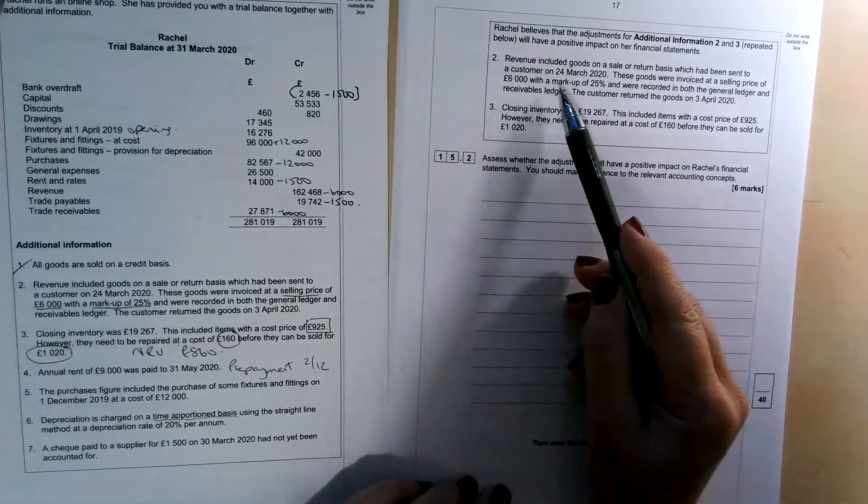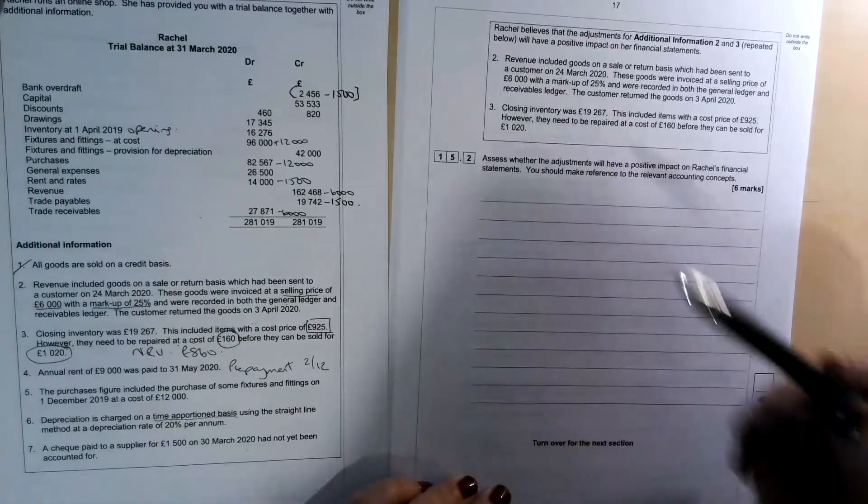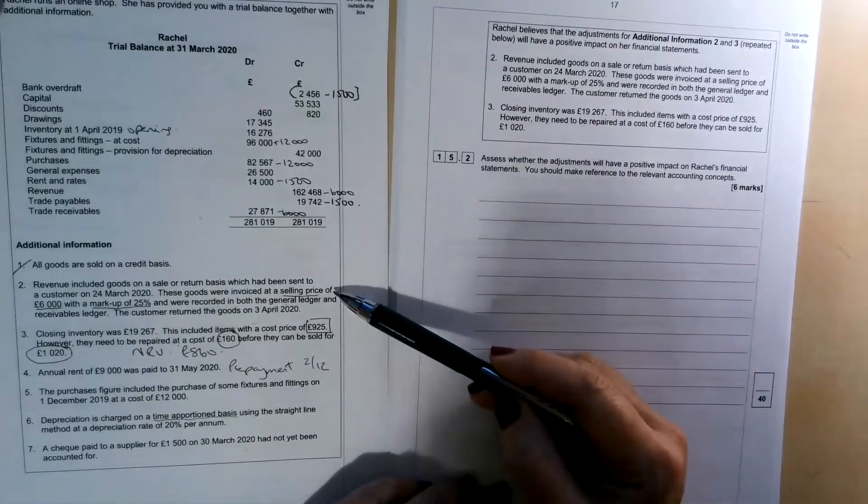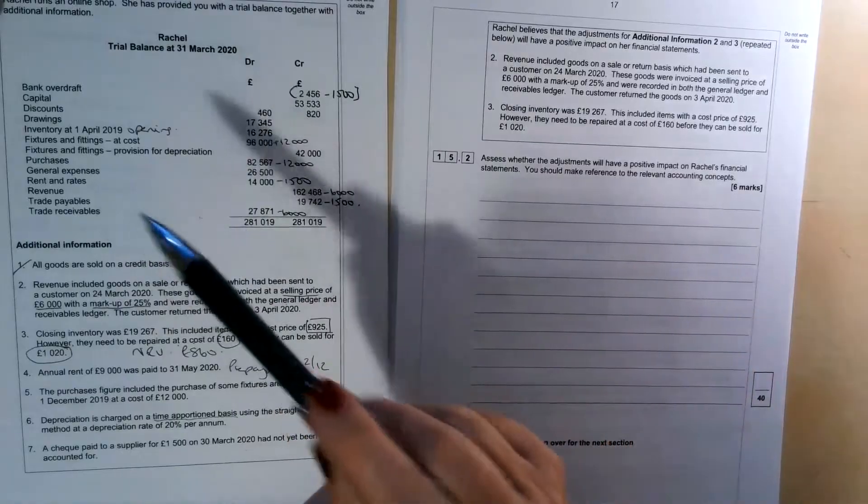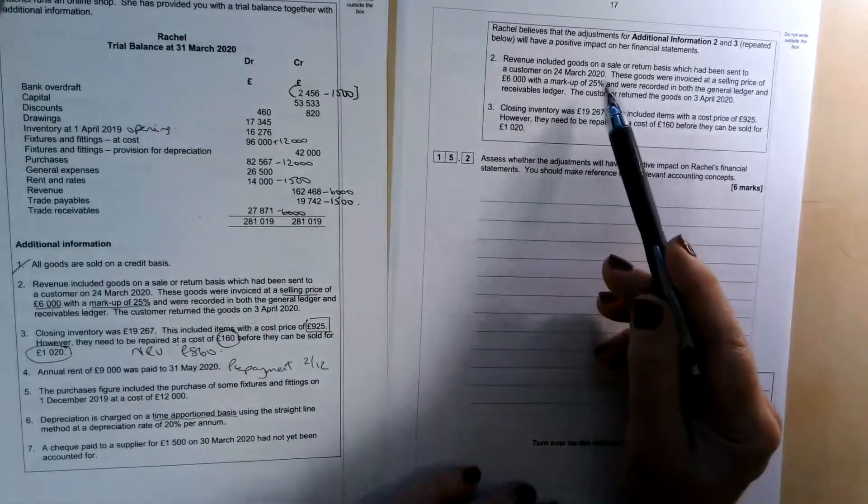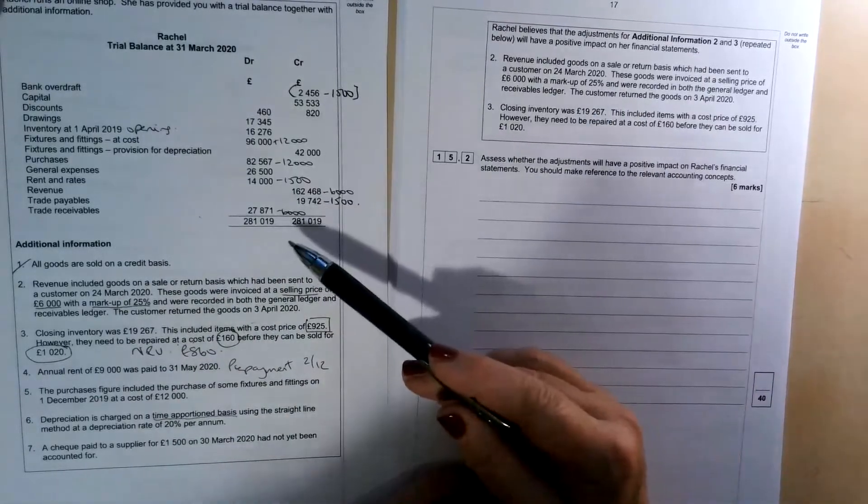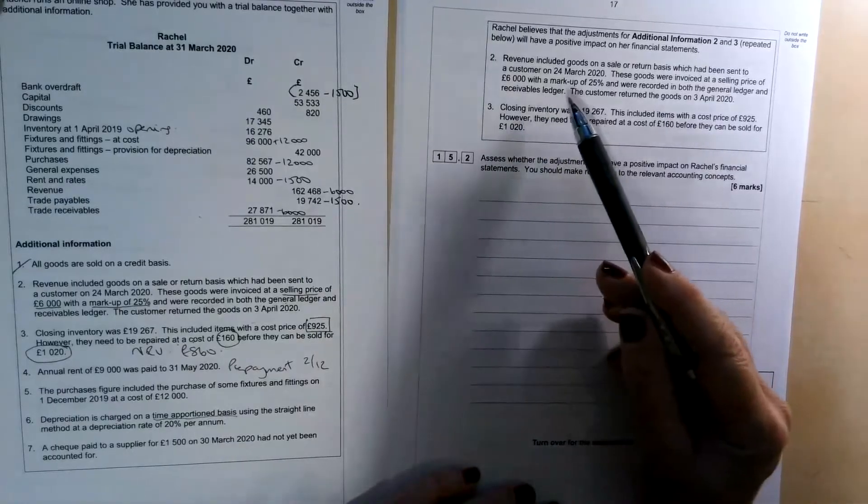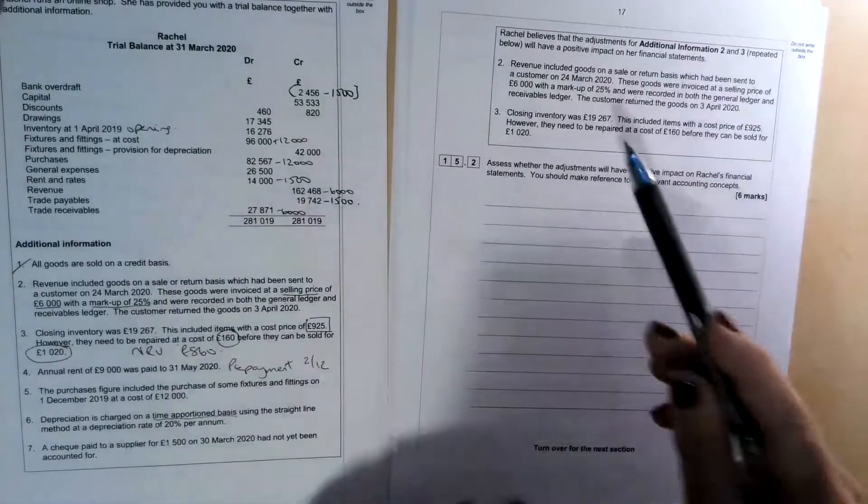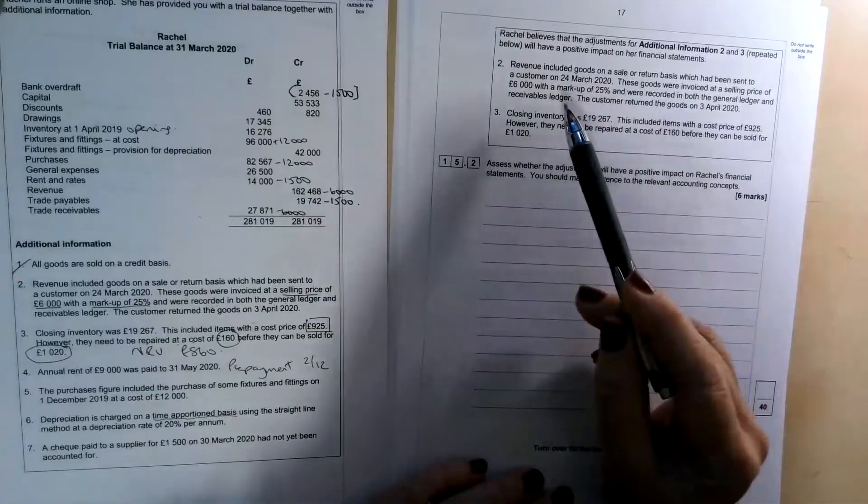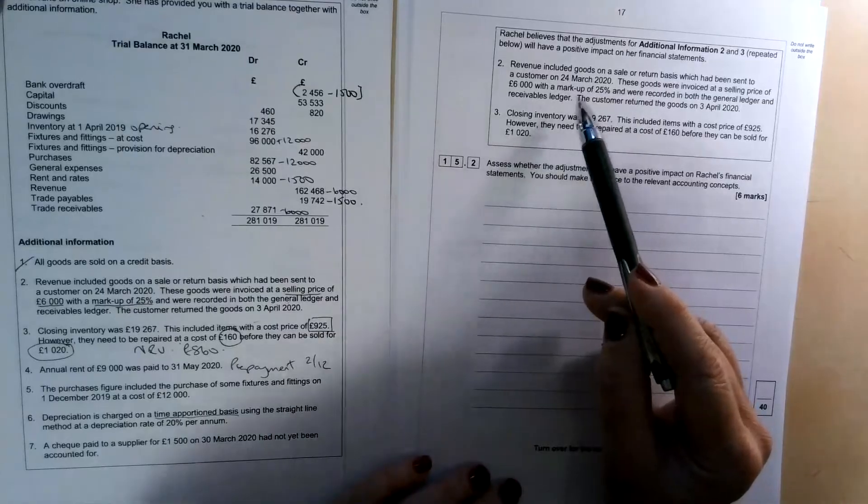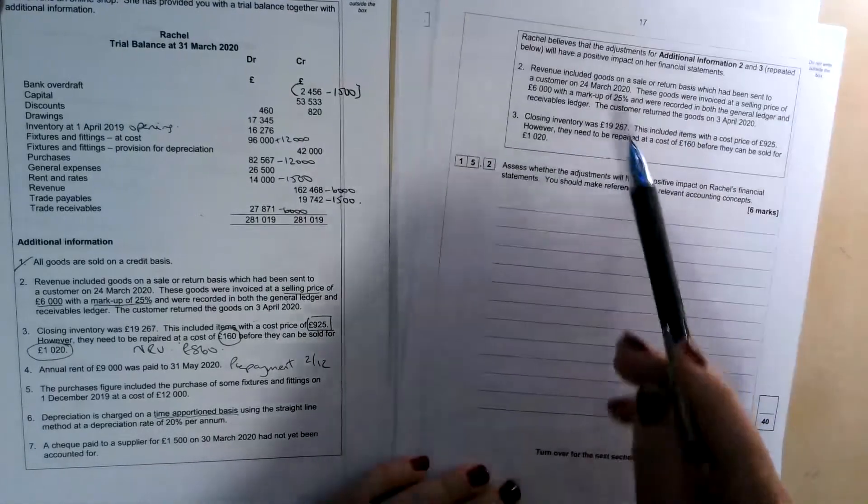So you've got a choice of two that you could include for this sale or return business. So one of them is the realisation concept, which is that we should only be realising the sale when legal title to the goods passes from the seller to the buyer. Now, clearly, if goods have just been given to a customer on a sale or return basis, that legal title remains with Rachel, they haven't transferred that to the customer. So realisation would state that we shouldn't be recording the sale, we should just leave the goods in our closing inventory until such times as they are actually sold. The other concept that we could use here is prudence. So prudence is where there's any doubt about anything, we shouldn't be anticipating any profits, we should always be erring on the side of caution. And if there is any doubt, reporting a lower, more conservative figure. So either of those would be absolutely fine there.